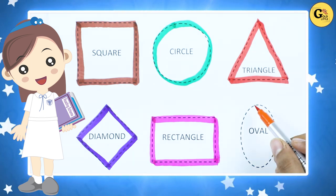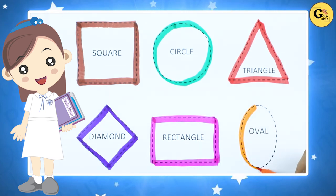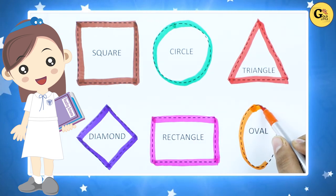Oval. We make oval with orange color. It's a oval.